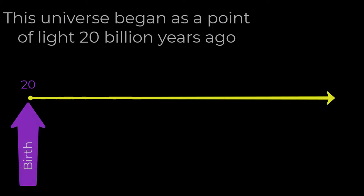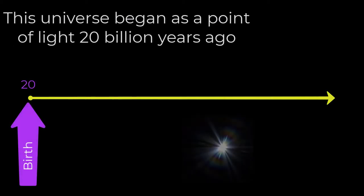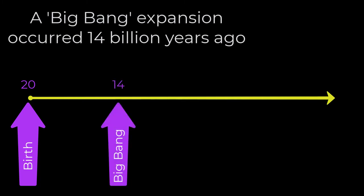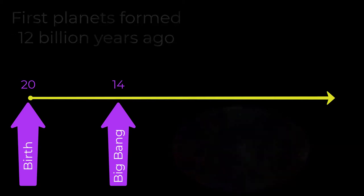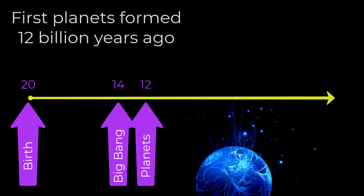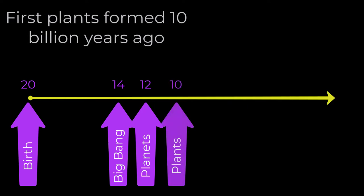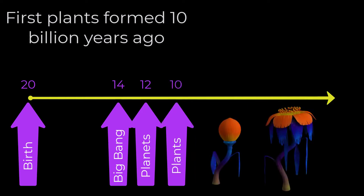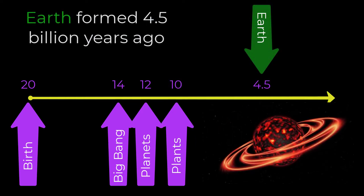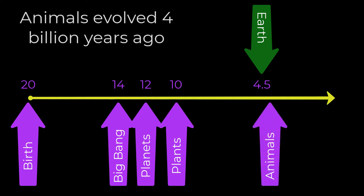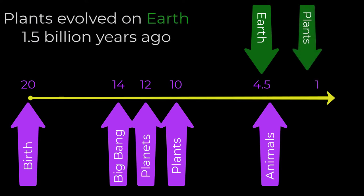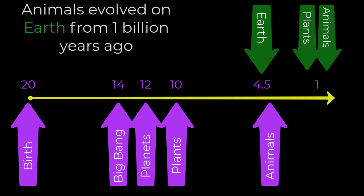This story begins 20 billion years ago, when the Universe began as a point of light. A Big Bang expansion occurred 14 billion years ago. The first planets formed 12 billion years ago, and the first plants 10 billion years ago. Earth formed 4.5 billion years ago. Plants evolved on Earth 1.5 billion years ago, and animals from 1 billion years ago.